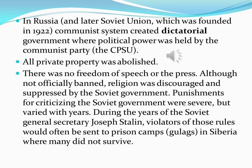Punishments for criticizing the Soviet government were severe, but varied with years. For example, during the years of General Secretary Joseph Stalin, violators of those rules would be sent to prison camps in Siberia, known as Gulags. They were subject to brutal treatment and harsh working conditions that caused many of them not to survive. Many were branded as enemies of the people and sent to those camps as punishment for their opposition.